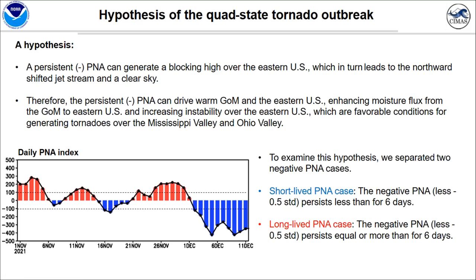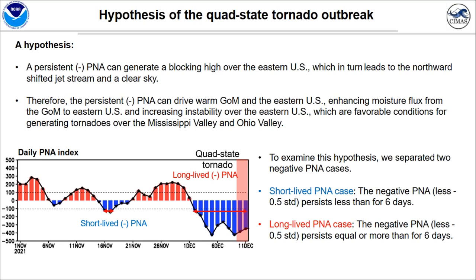We set up an additional hypothesis to investigate the mechanism of the cold-state tornado outbreak. The hypothesis is that a persistent negative PNA can generate a blocking high over the eastern U.S., which in turn leads to a northward-shifted jet and clear sky to heat the eastern U.S. and Gulf of Mexico. This persistent negative PNA drives warm Gulf of Mexico and eastern U.S. conditions, enhances moisture flux, and increases atmospheric instability over the eastern U.S., which in turn generates enhanced tornado genesis over the cold-state region.